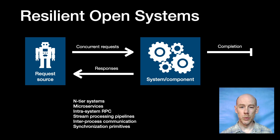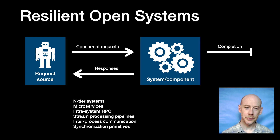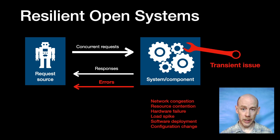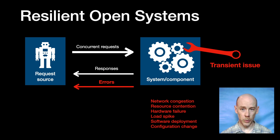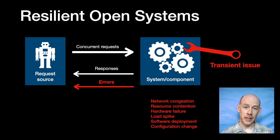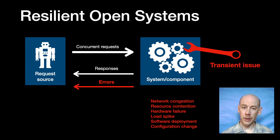One of the core challenges when building distributed systems is making them reliable. There's a multitude of triggers that might cause some requests to fail in a complex system. They could be unexpected internal things like network congestion or hardware failure. They could be external — a load spike or a change in the workload. Errors might also be a known side effect of something done on purpose, like a software deployment or a configuration change. While it's good to reduce errors from these transient issues, the most important thing for reliability is that the system self-heals.